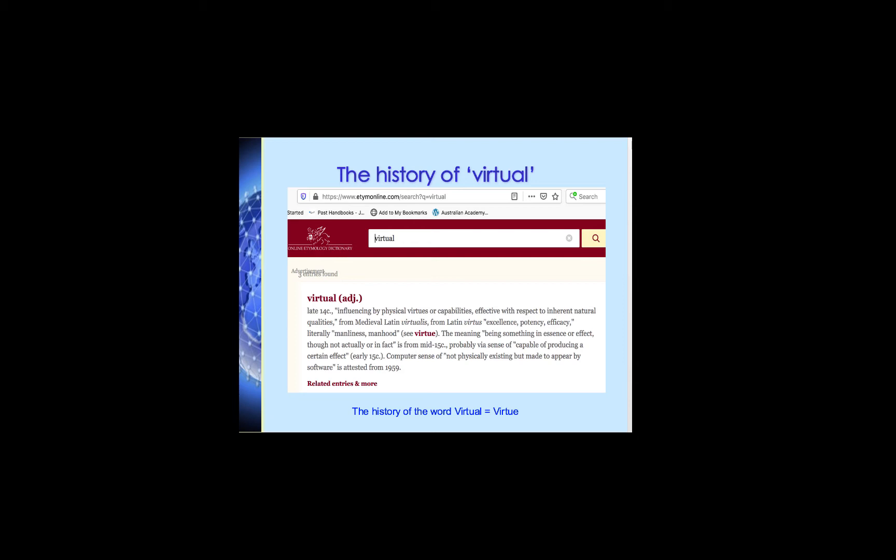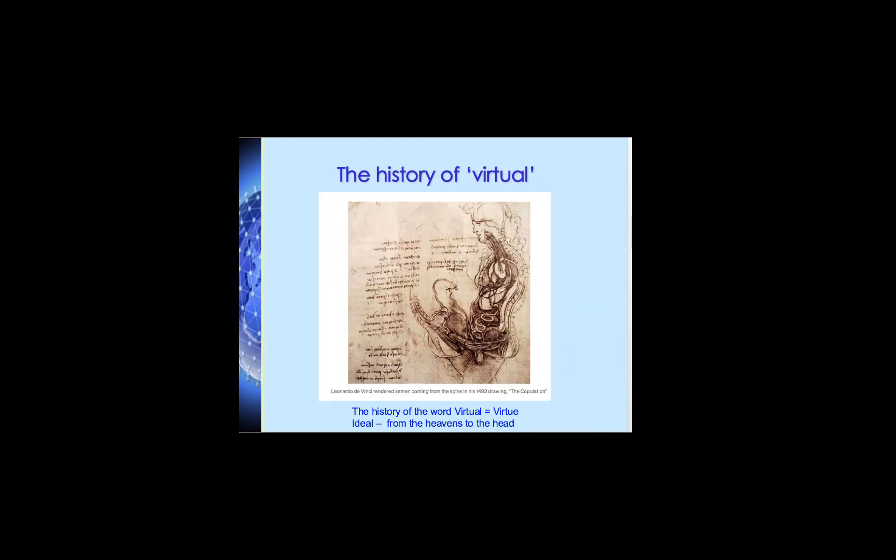Going back to these very early definitions, prior to the 15th century the word had a strange meaning. When I look at the history of words, it's the things that stick out as really odd that I spend more time thinking about. Here we get that 'virtual' literally meant manliness, manhood, or potency — and also 'influencing by physical virtues.' So something to do with virtue and something to do with potency and power. That meaning stabilizes from early Latin until the early to middle Middle Ages.